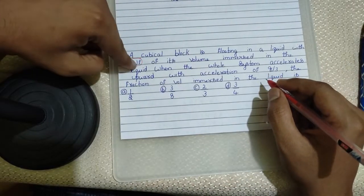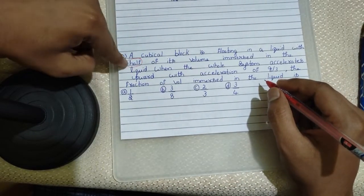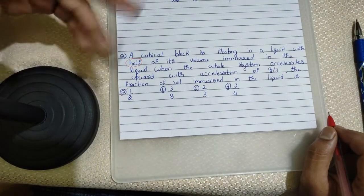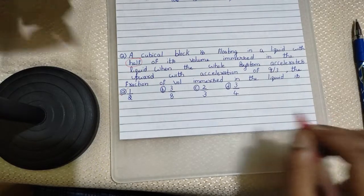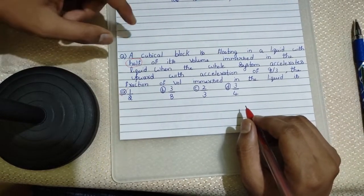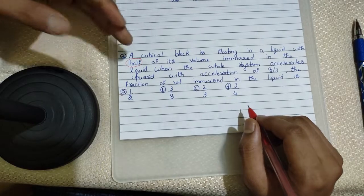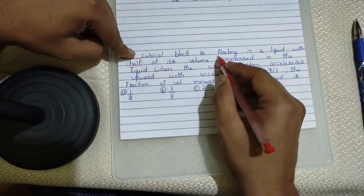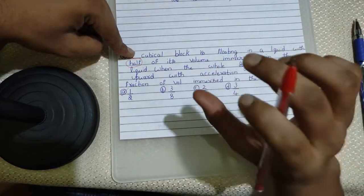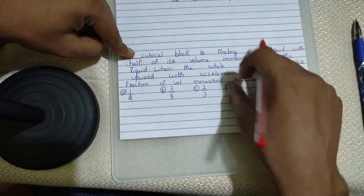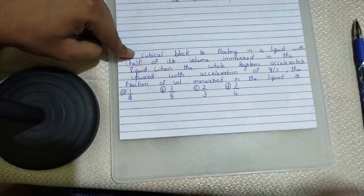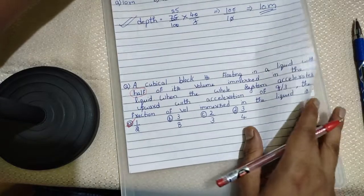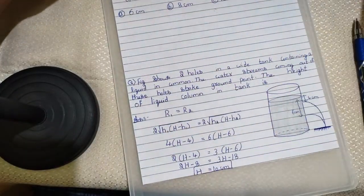Whenever you come across this type of question, your half will be your answer. Just as simple as it is. Just remember the trick. Remember the formulas. It might be useful for solving any other question. But when you come across this type of question, a cubical block which is floating in a liquid, how much ever portion of the block which is floating in the liquid, that portion will be your answer. So, 1 by 2 will be your final answer for this.